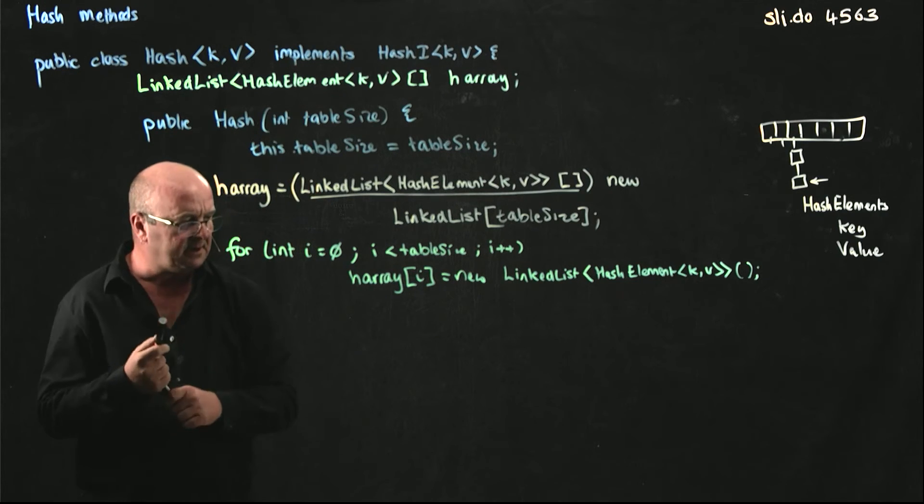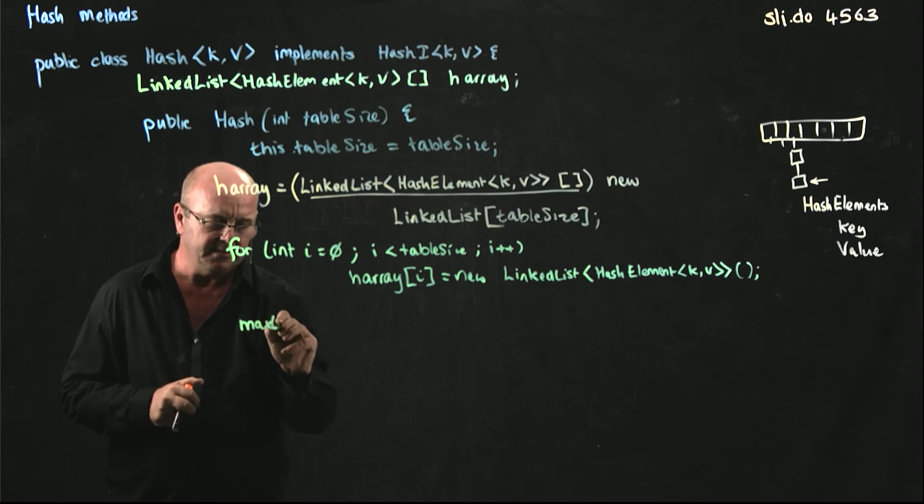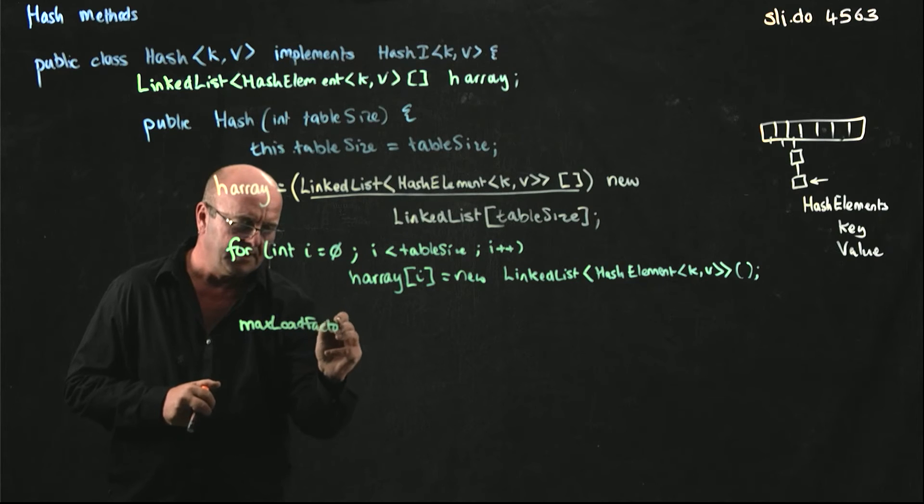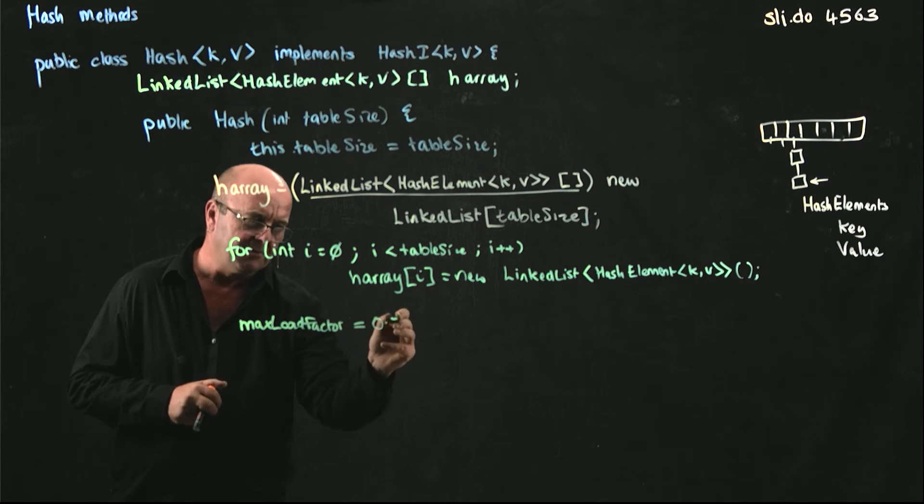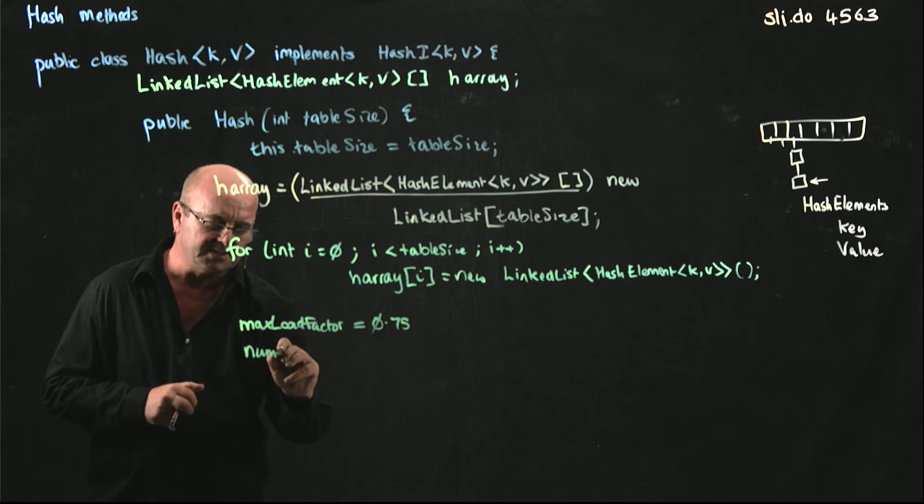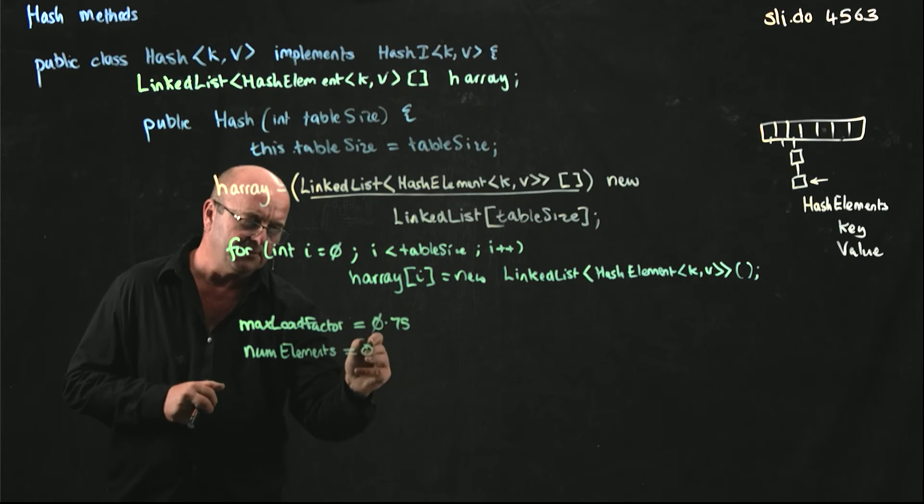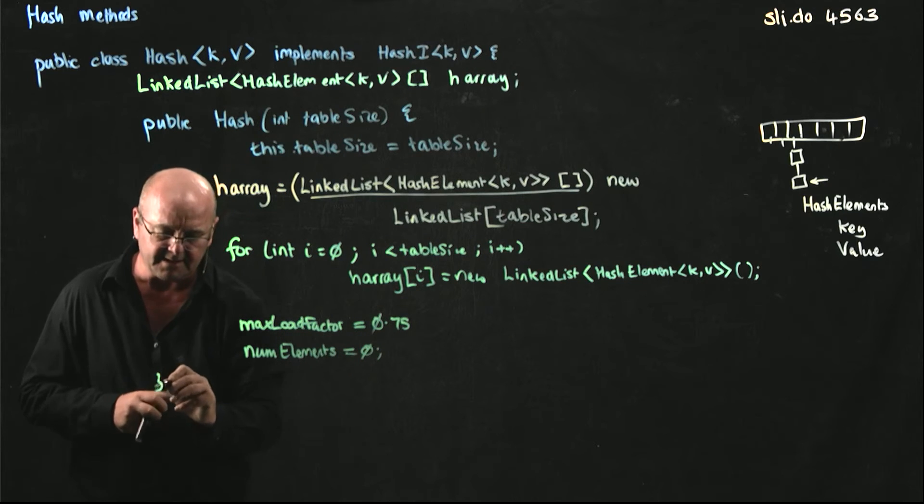Finally, we just set a couple of global variables. Let's set our max load factor equal to 0.75 and our num elements equal to zero because we don't have anything in our data structure yet.